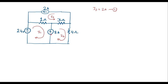Here we can also observe that there is a current source between two loops — that is, in between loop I1 and I2, there is a current source. So if there is a current source between two loops, we need to analyze the current source first. I can write this current source 8 amps as: 8 is equal to I2 minus I1.